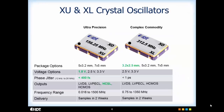Looking at the XU and XL, the phase jitter is the primary difference. However, there are other options only available in one or the other. For package size, both are available in 7x5 and 5x3.2 mm, with the XL having the additional option of 3.2x2.5 mm. For outputs, both have LVDS, LVPECL, and CMOS, with HCSL also being available in the XU.